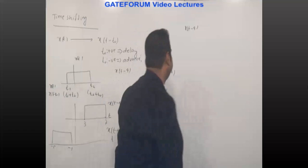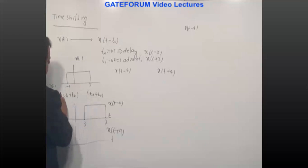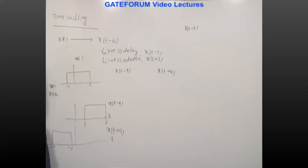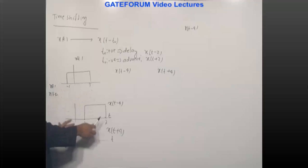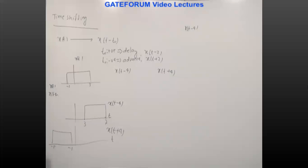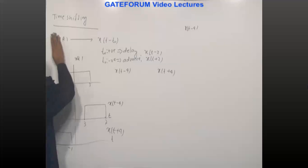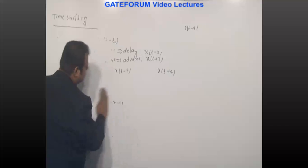An important point: in time shifting, the width of the signal does not change. If x(t) covers -1 to 3, width is 4. x(t-4) covers 3 to 7, width is still 4. x(t+4) covers -5 to -1, width is still 4. We are just shifting the signal left or right on the time axis without altering its width. Time shifting does not alter the width of the signal.